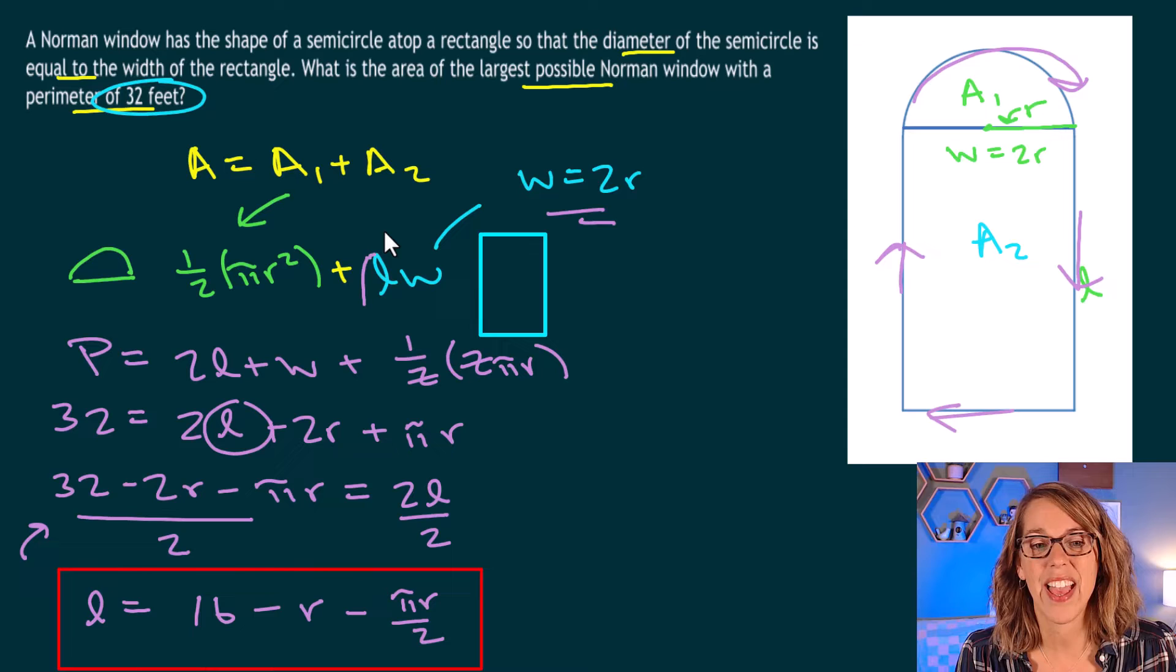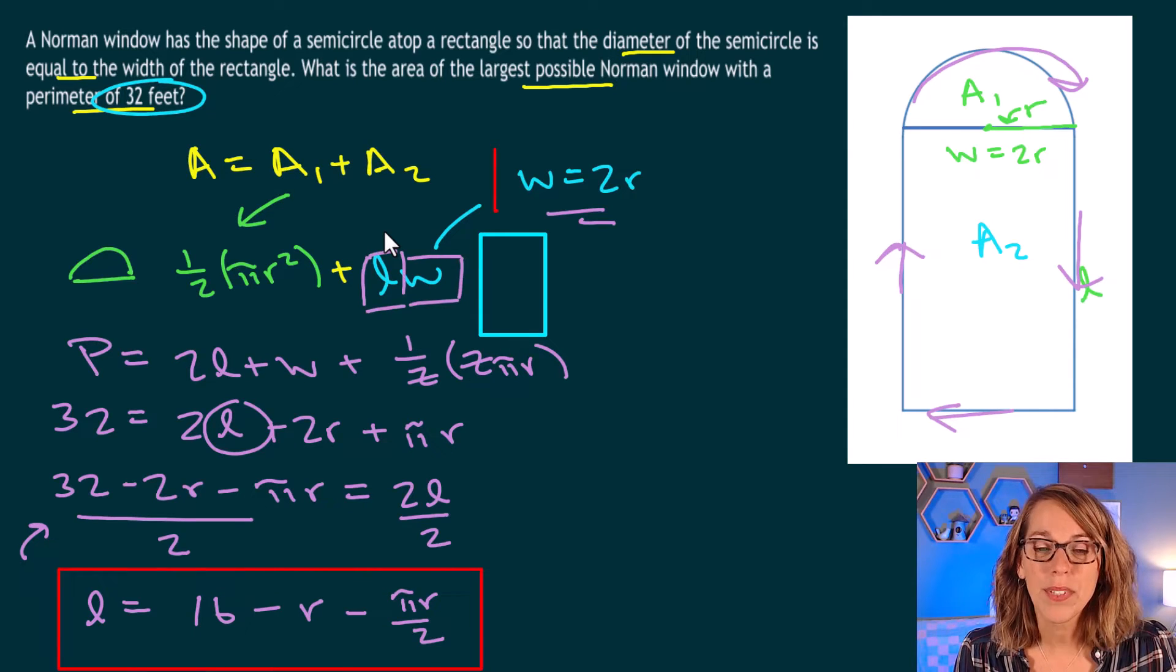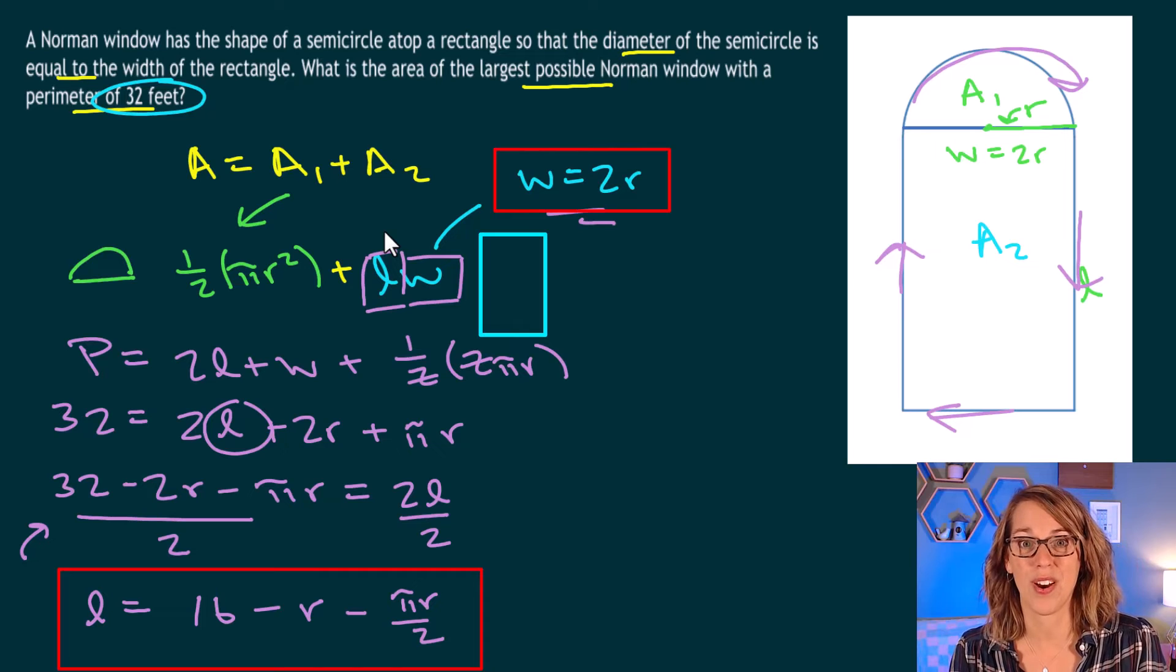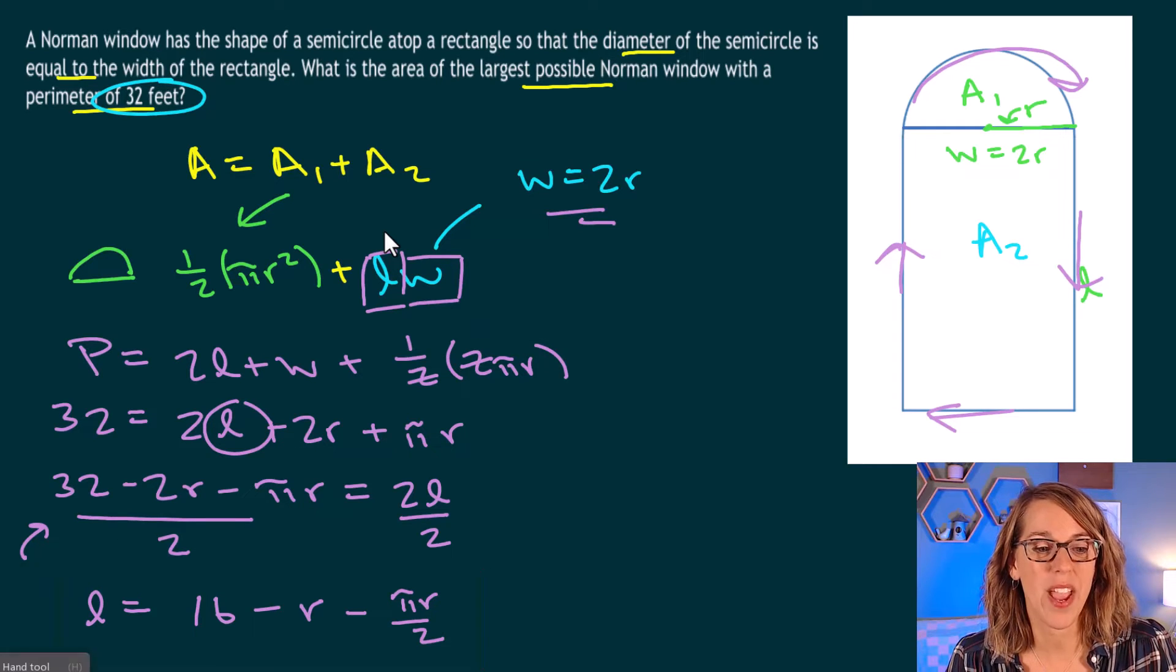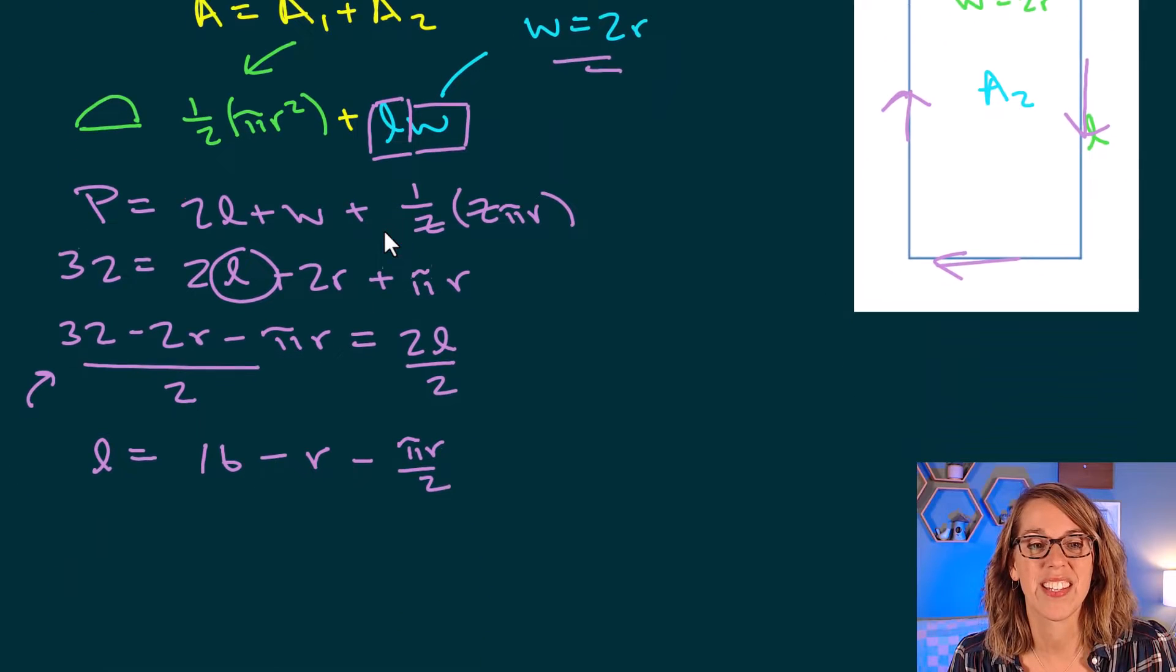So now I've got l in terms of r, and I can write my w in terms of r as well. Let me go ahead and move some of this information up out of the way, and we can put this together.